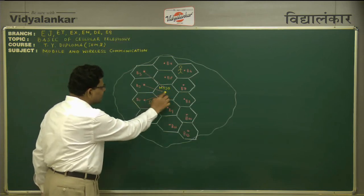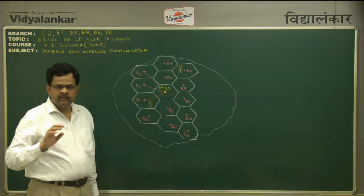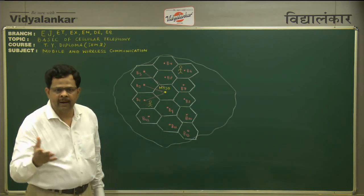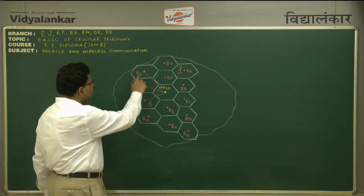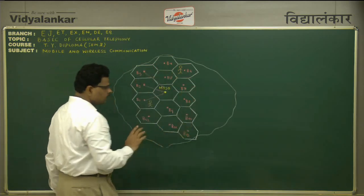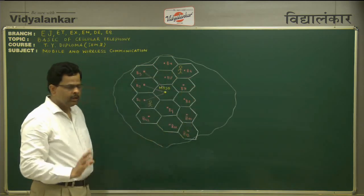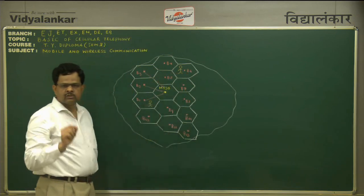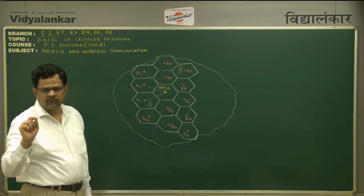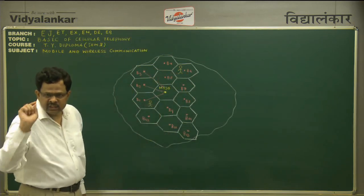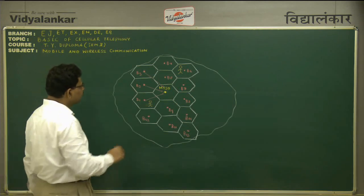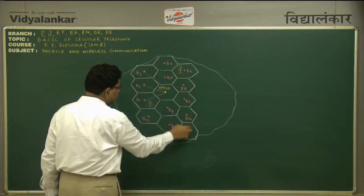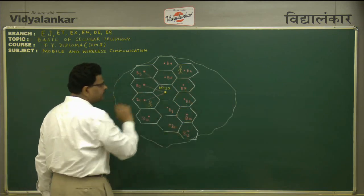So what MTSO will do is transmit the cell number of the called party to all the base stations. Suppose the called party number is 123456789 — then this number will be transmitted to all the base stations by the MTSO.